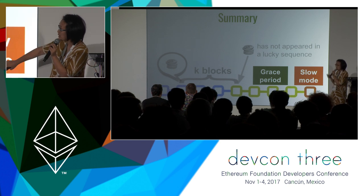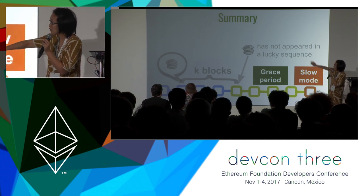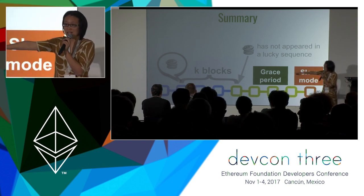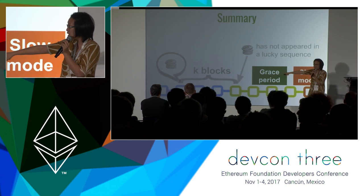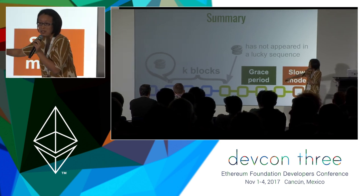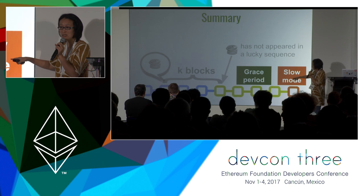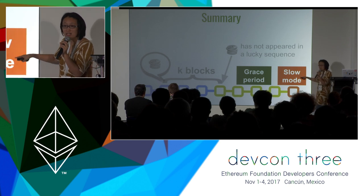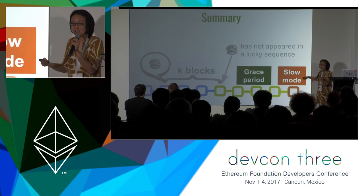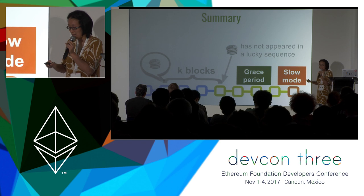To quickly recap: you use the blockchain to detect that the fast path has failed, then leverage a grace period to enter the slow mode. When in slow mode, you can always try to reelect a leader and re-bootstrap a fast path.